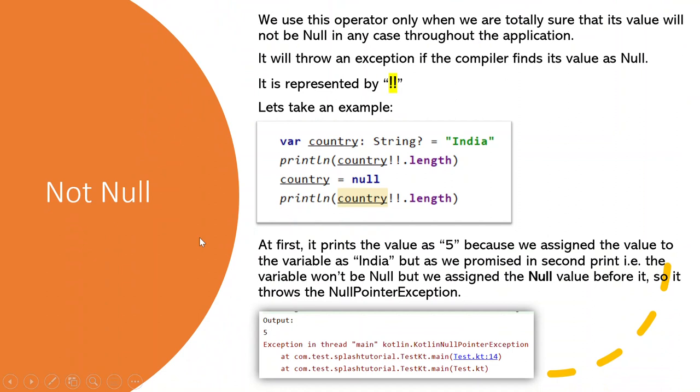Next, not null. Not null is the operator with the variable when we are totally sure that the variable value will not be null throughout the application. If the compiler finds out the value as null, it will throw an exception. It is represented by double exclamation sign.